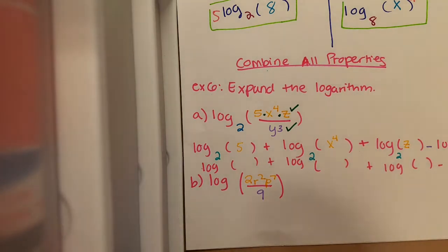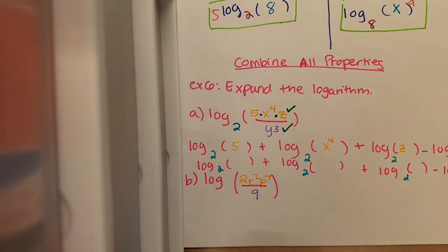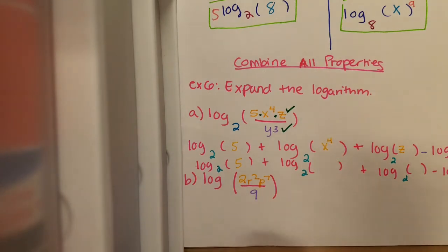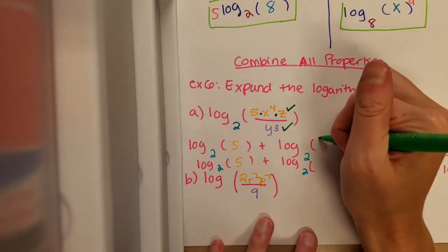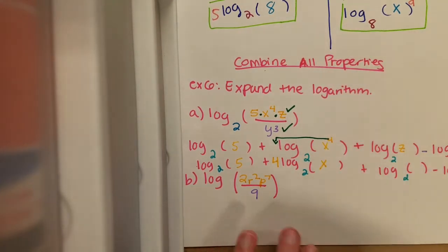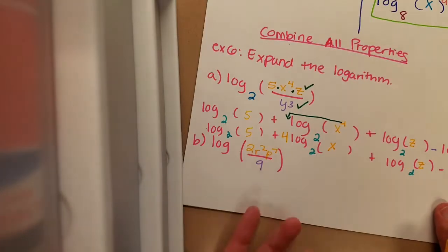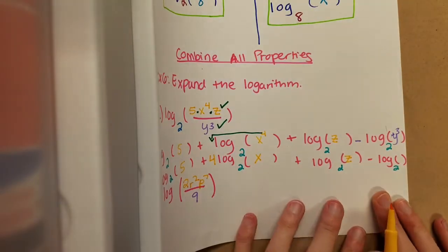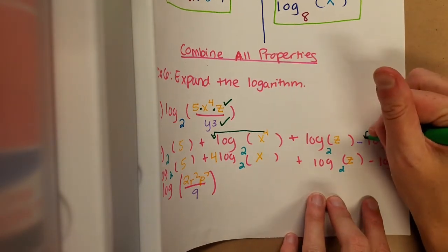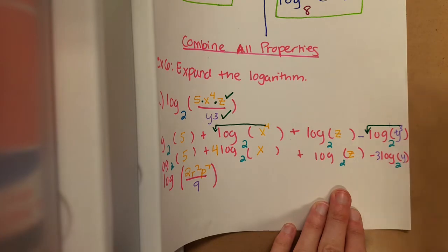I'm going to go ahead and write in all my bases, because I already know all my bases are going to be a 2. That first number is set — it's 5. It doesn't have an exponent, so I'm just going to leave it as 5. My next one does have an exponent, so we are going to be shifting that exponent to the front of the logarithm. So the 4 is going to go in front of the log, and my x will just stay inside of the log. My next log doesn't have any exponents, so it's going to remain as z. And then my final log does have an exponent — that y to the third is an issue. So we're going to move that 3 to the front of the logarithm; it'll be minus 3, my 3 will go in the front, and then my y is going to remain in the log.